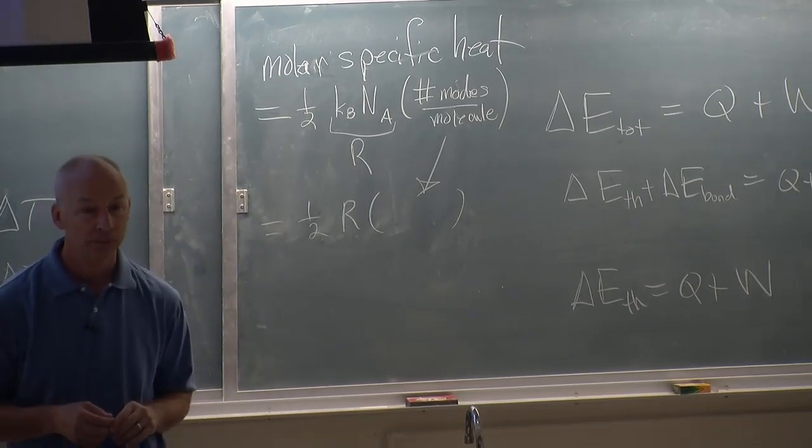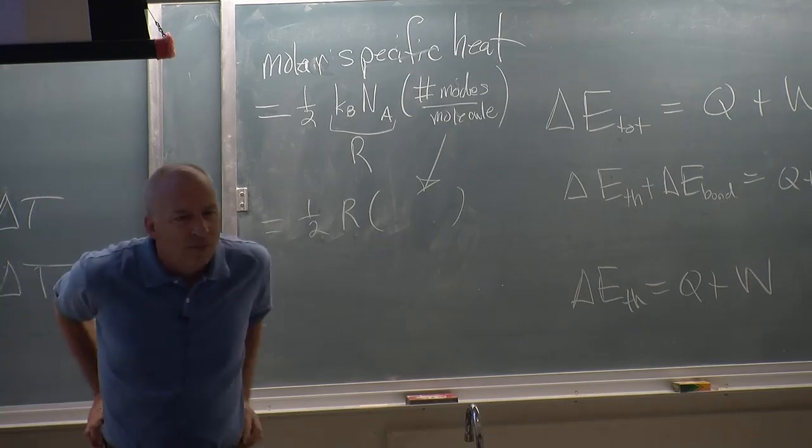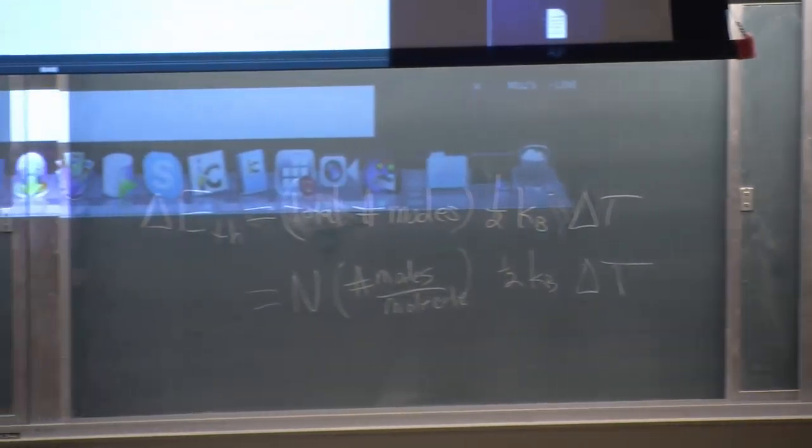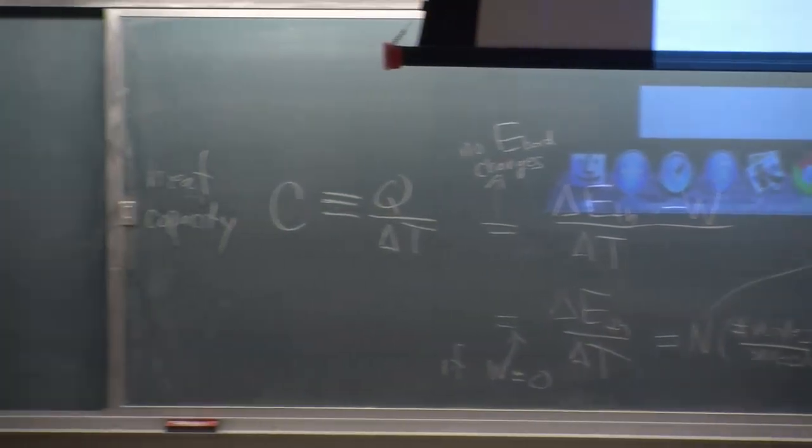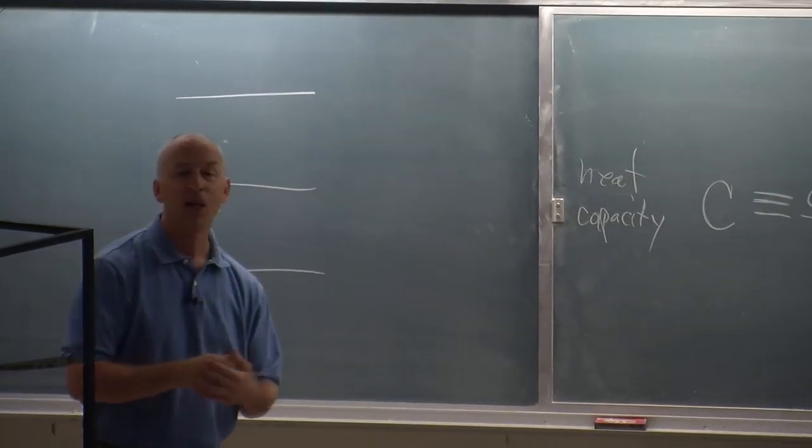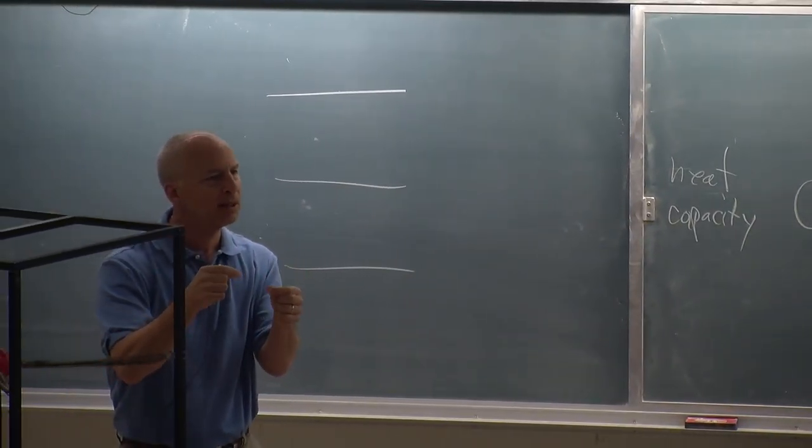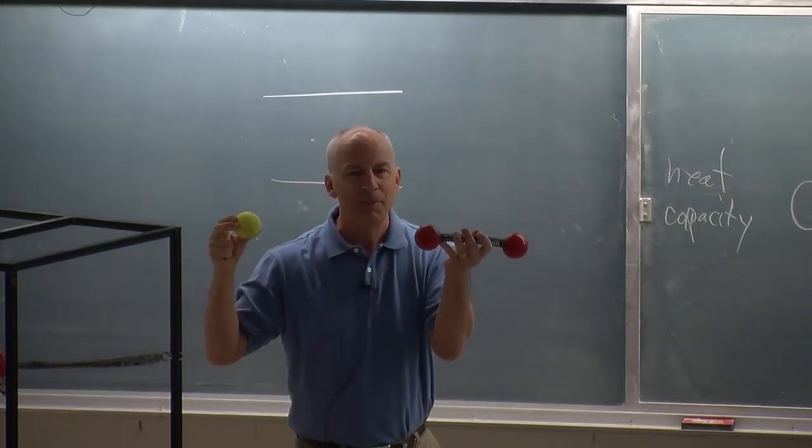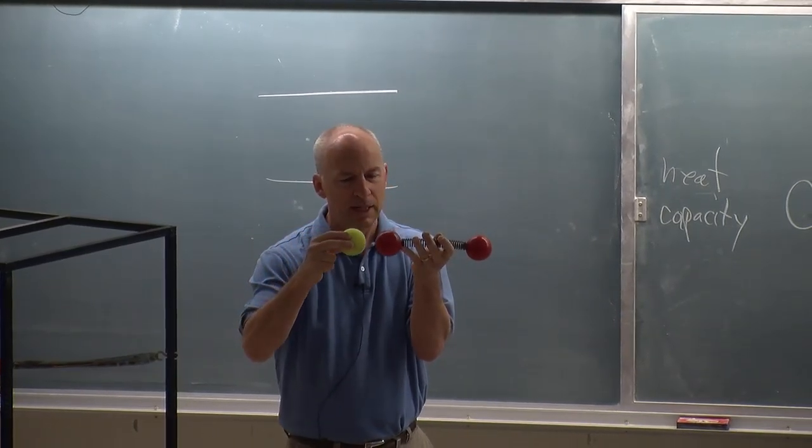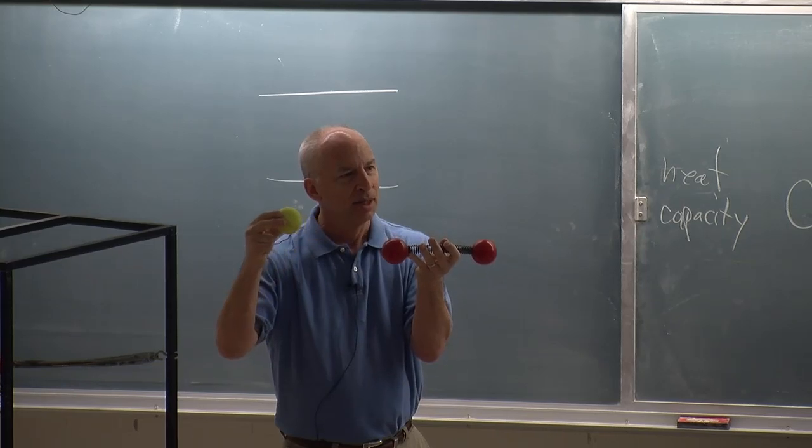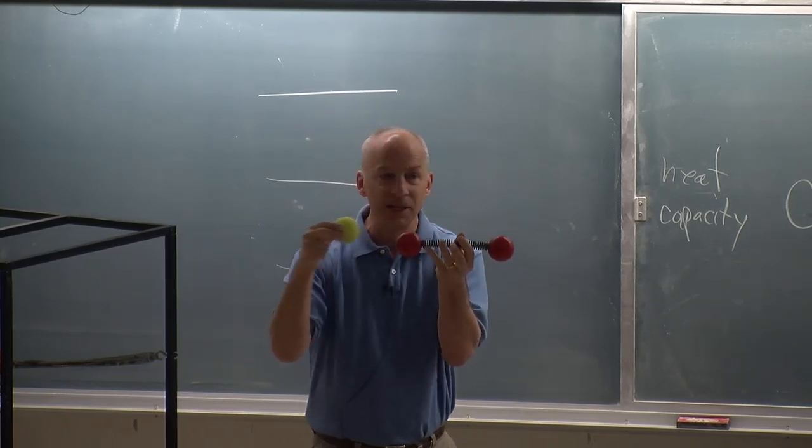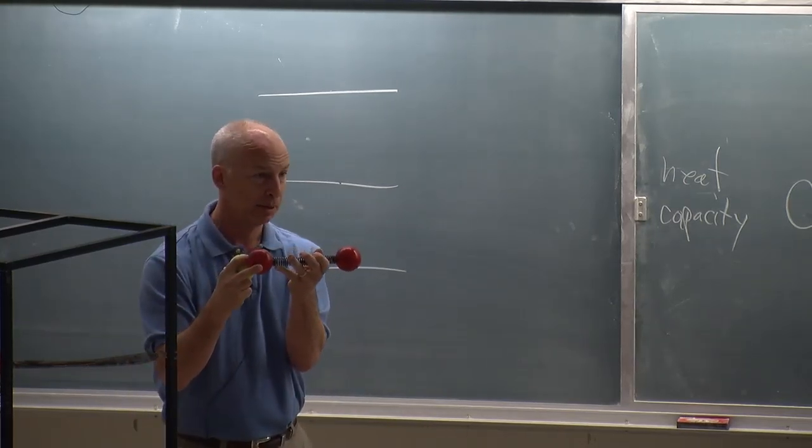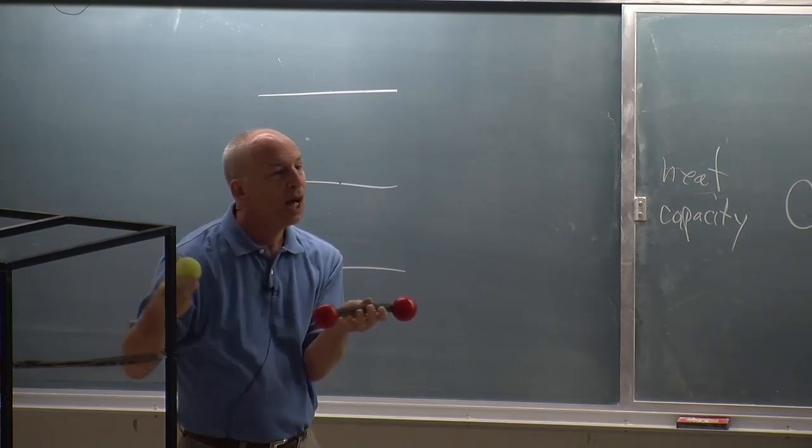As it was pointed out, some modes at low temperatures can be frozen out and just not there anymore. And the ones that are not there, the first ones to disappear as the temperature goes down are the vibrational modes. And sometimes you lose some vibrational modes but not others. Or actually you don't lose any of them quickly. What happens is as it cools down, modes become less and less active. So as the temperature changes, you're kind of losing modes continuously.